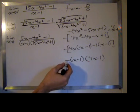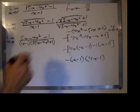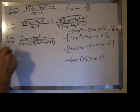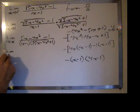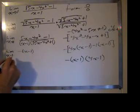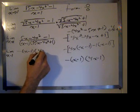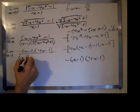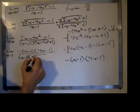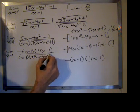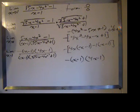I'm going to rewrite this limit in the factored form of the numerator. So the limit as x goes to 1 of negative times x minus 1 times 4x minus 1 over the quantity x minus 1 times the square root of 5x minus 4x squared plus 1.